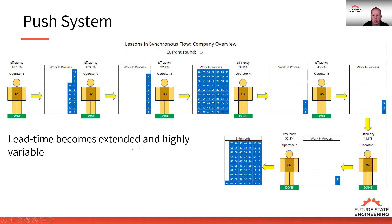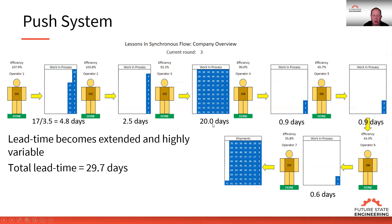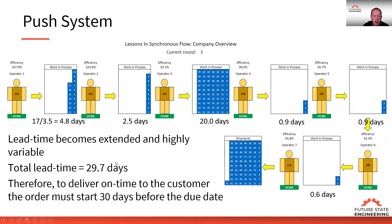When we start a job, it's very difficult to determine when that job is going to finish. If we look at calculating the lead time, we take the amount of inventory between the process steps, divide by the customer demand rate, and we get how many days of inventory. In this case, we got 4.8 days of inventory between operator one and two, two and a half on the next operation, 20 on the next, 0.9, 0.9, and 0.6. So our total lead time for a job to go from start to finish is 29.7 days. Therefore, to deliver on time, we need to start the order about 30 days before the due date.